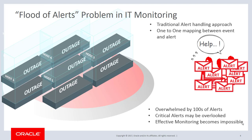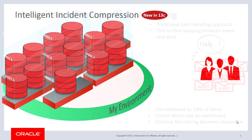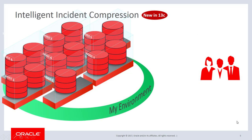Although they went down for the same reason, this is the flood of alerts problem in IT monitoring. Because of the massive number of alerts you receive, effective monitoring becomes impossible until the root cause of the outage is fixed. In Enterprise Manager 13c, we introduced the Intelligent Incident Compression feature to particularly address these types of use cases.